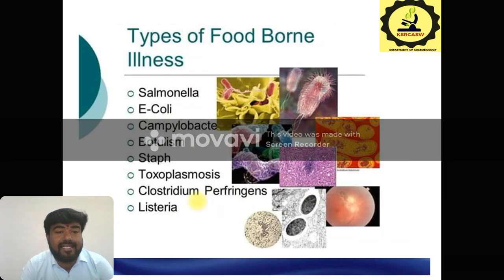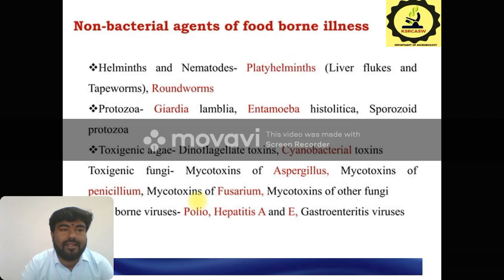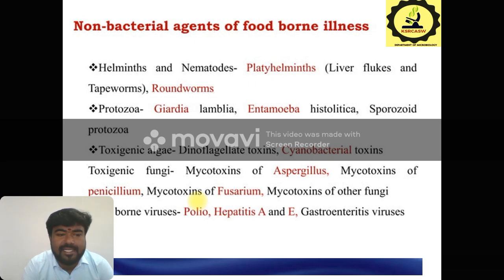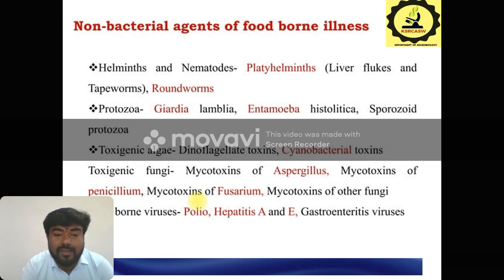What are the types of foodborne illnesses? For example, Salmonella causes Salmonellosis, E. coli and Campylobacter, Botulism, Staphylococcus, Toxoplasmosis, and Clostridium perfringens, then Listeria. Then non-bacterial agents of foodborne illnesses — non-bacterial agents mean some helminths, nematodes, and platyhelminths. Then Protozoa, toxigenic algae, dinoflagellate toxins, cyanobacteria toxins, and toxigenic fungi — especially Aspergillus and Penicillium. Then also some foodborne viruses: polio, hepatitis, and gastroenteritis. These are the major foodborne illness-causing organisms.